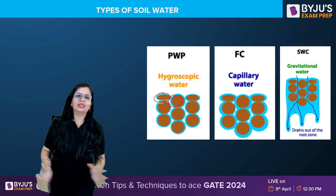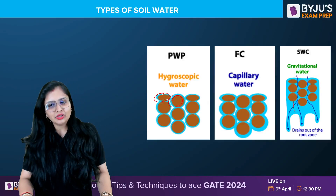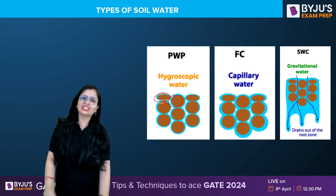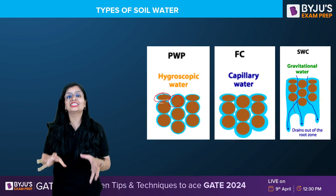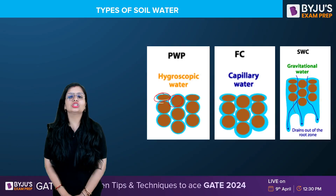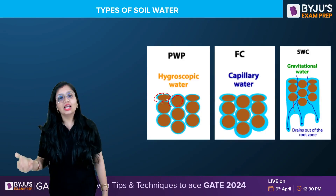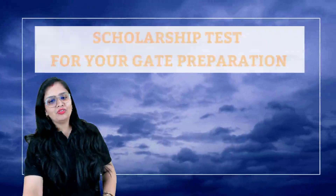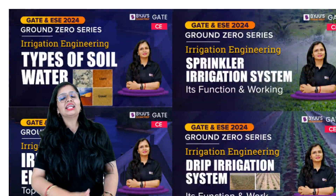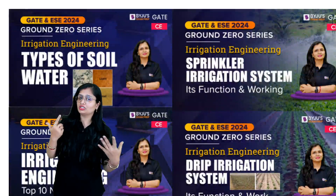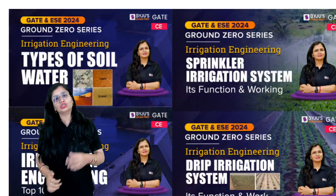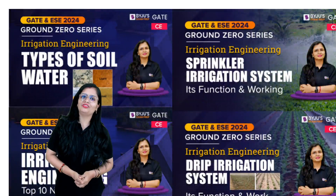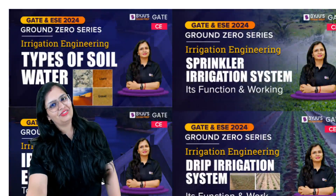To conclude: capillary water is held by surface tension forces and is the main source for plants; gravitational water drains freely under gravity; hygroscopic water is tightly held to soil particles by strong adhesive forces and unavailable to plants. Remember, water retention properties of soil should not hold an excessively large amount of water as it leads to rotting of plants. Upcoming classes will cover sprinkler irrigation and drip irrigation, and we'll have numericals of irrigation engineering as well. Take care and study hard!